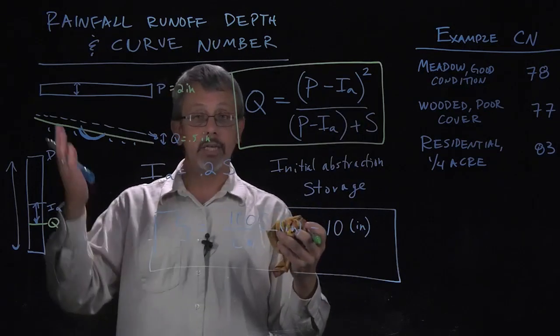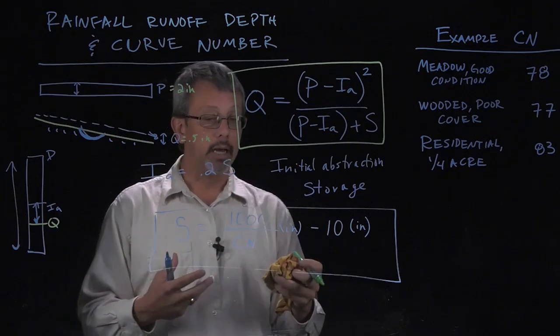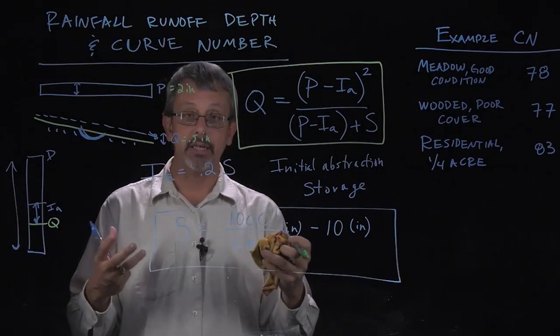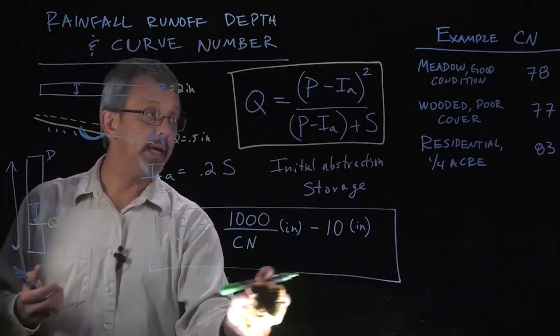Those conditions include things like the slope, the shape of the watershed, the presence of vegetation, things like that. That curve number represents the tendency of the water to either runoff or stay in one place.